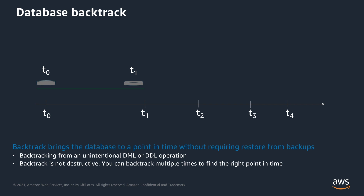Let me walk through a scenario to understand the Backtrack feature better. Let's say you're performing testing on your database to understand how your application reacts with each of these changes. You're making changes starting at time T0 and T1. Then at some point after that, you want to rewind back to a specific time because you identified that you need to do some more testing from that point. Backtrack rewinds the cluster to T1, and the changes will be available in the cluster storage but will be invisible when you perform the backtrack operation. From that point, you can continue to make changes for time T2, T3, and so on.